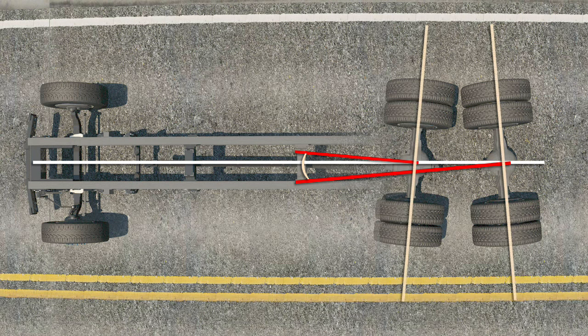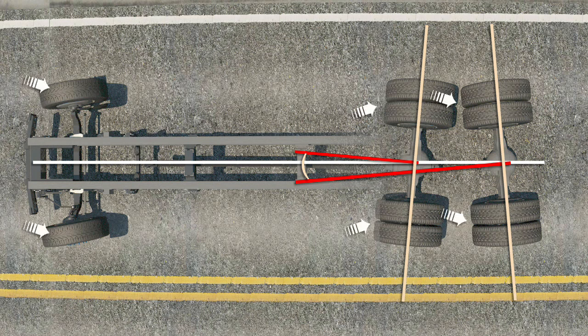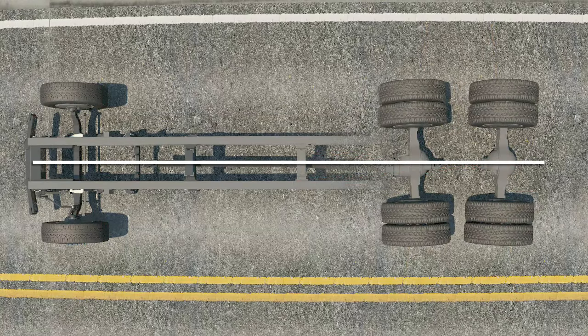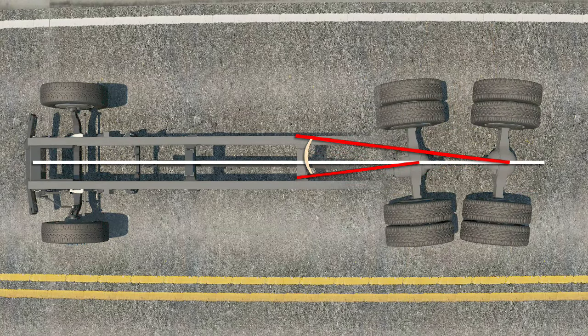Excessive scrub angle forces the tandem axles to work against each other, while the front wheels have to be steered to offset the push and keep the vehicle traveling straight ahead. This misalignment condition will cause scrubbing on every tire. Here, the tandem scrub is in the opposite direction.